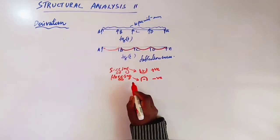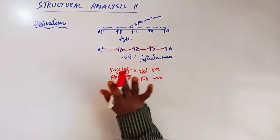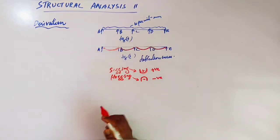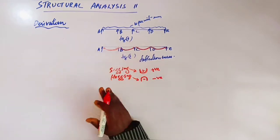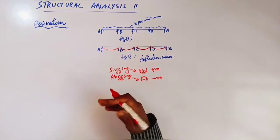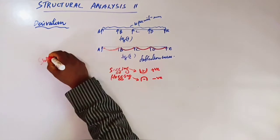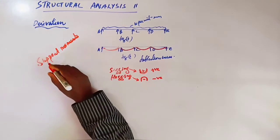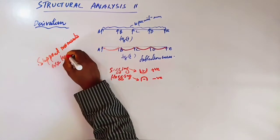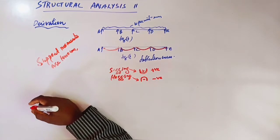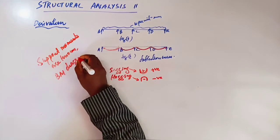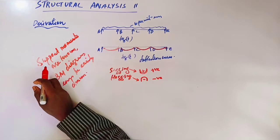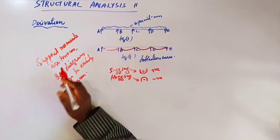Sagging moment occurs at the mid-span of the beam and hogging moment occurs over the supports. If the support moments are known, the bending moment diagram can be easily drawn.